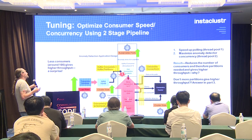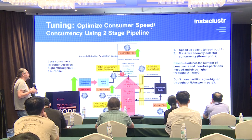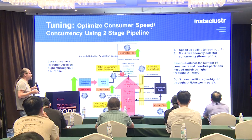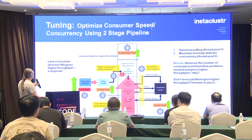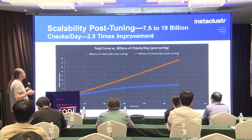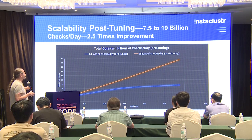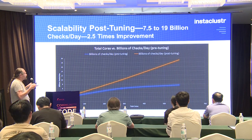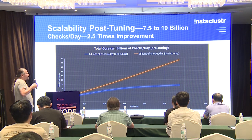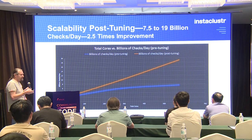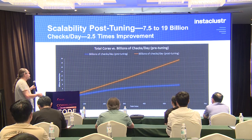What was the result? It reduced the number of consumers and therefore the number of partitions needed, and gave higher throughput. Here was the result of that tuning experiment — scalability post-tuning. It increased throughput significantly from 7.5 to 19 billion anomaly checks a day, which is 2.5 times the pre-optimized approach. We got far more value from the same number of cores and clusters purely through tuning the software and improving concurrency on the Kafka consumer side.